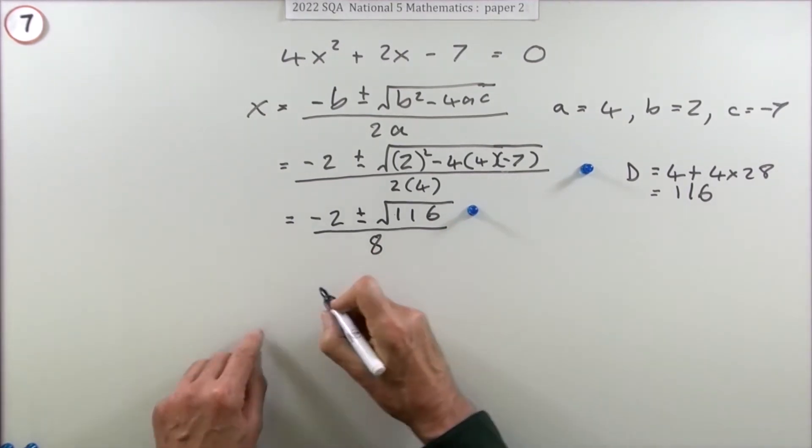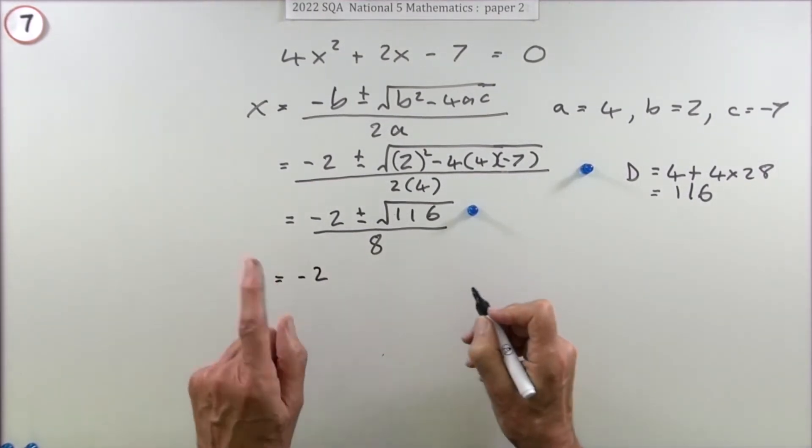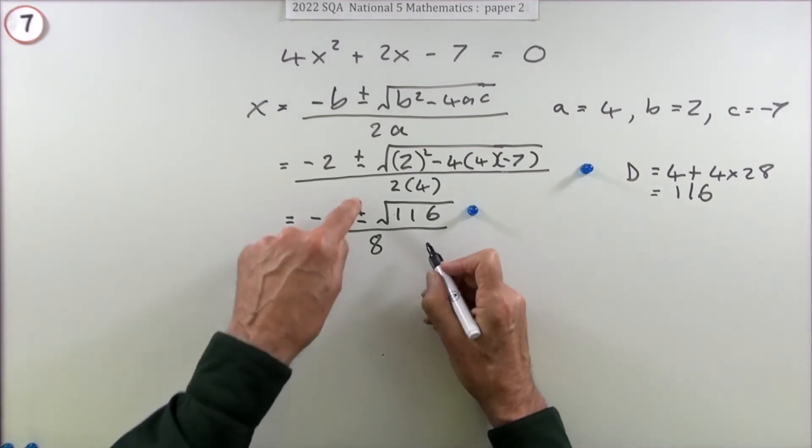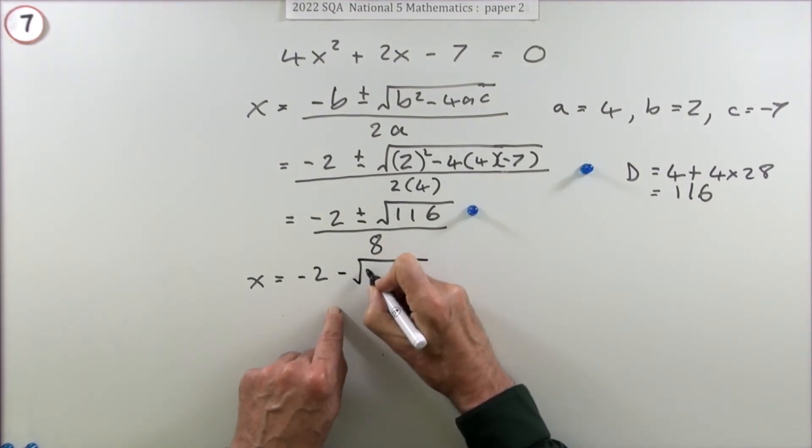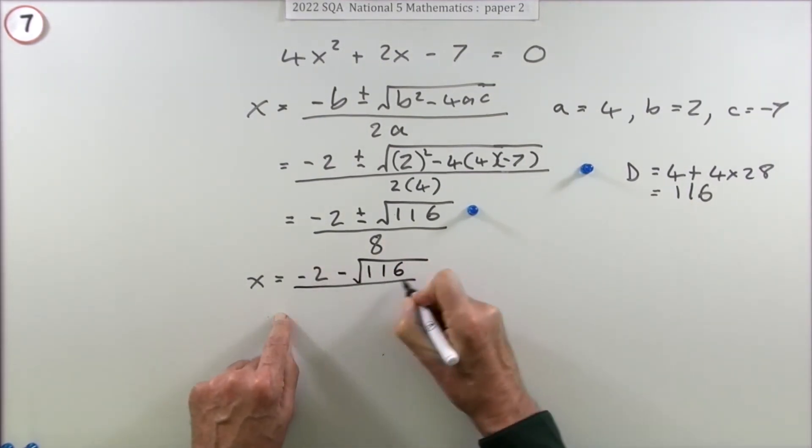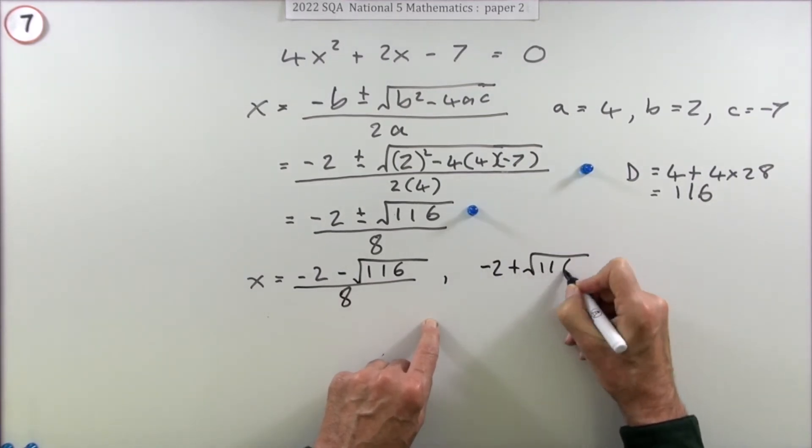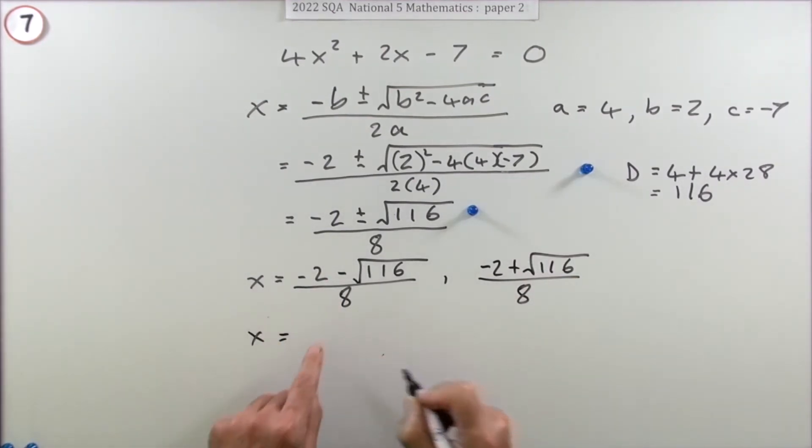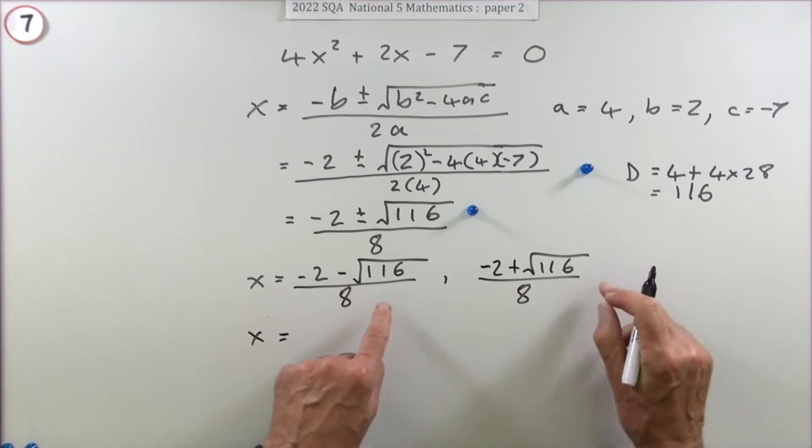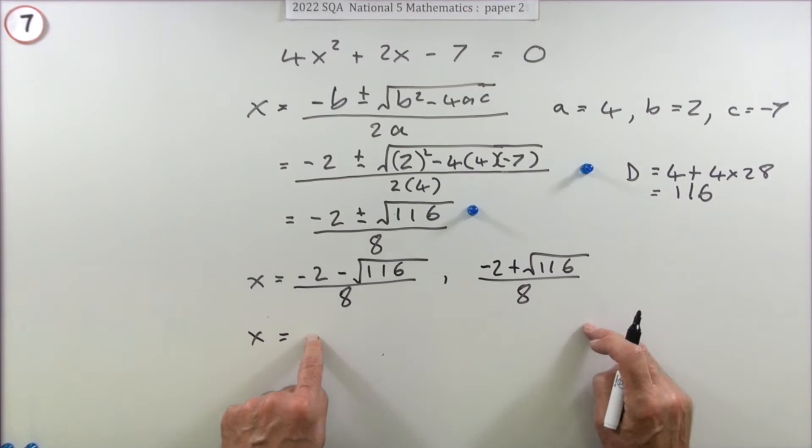You don't need to put the next part down at all—I'm just splitting this up to show the two parts. The two answers would be -2, one with plus, one with minus. I'll put the minus first because that gives the smaller answer: -2 minus √116 over 8, or -2 plus √116 over 8. That's not worth a mark. What you should do next is put that into your calculator and write down the unrounded answer before the rounded answers.